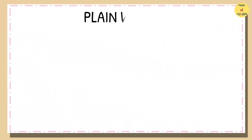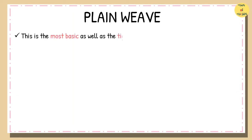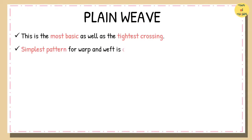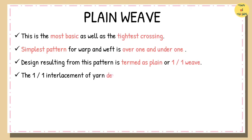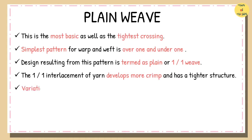Plain Weave. The plain weave pattern is the most basic as well as the tightest crossing of the warp and weft threads. The simplest interlacing pattern for warp and weft threads is over one and under one. The weave design resulting from this interlacement pattern is termed as plain or one-by-one weave. The one-by-one interlacement of yarns develops more crimp and the fabric produced has a tighter structure.